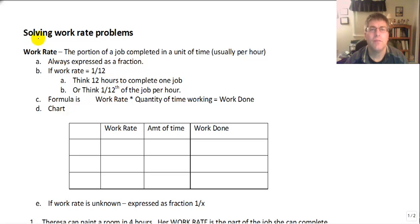Welcome back. In this video, we're going to solve work rate problems, and we will use charts to help us out. But first, we need to talk a little bit about work rate. What is work rate? Work rate is how efficiently somebody completes a job, or how fast or slow they do it. Work rate is essentially the portion of a job completed in a unit of time, and this is usually per hour.